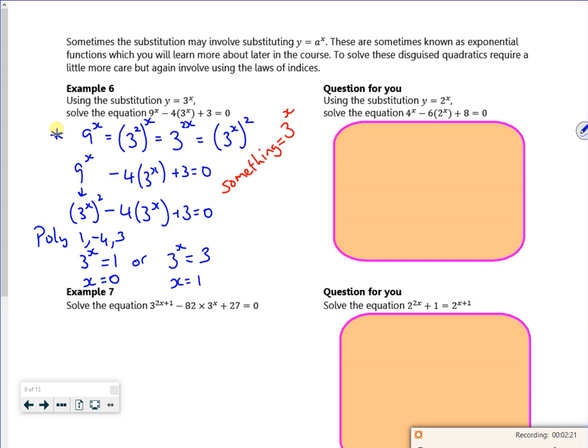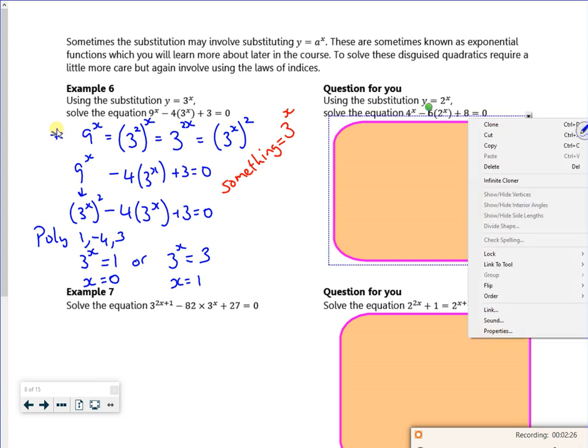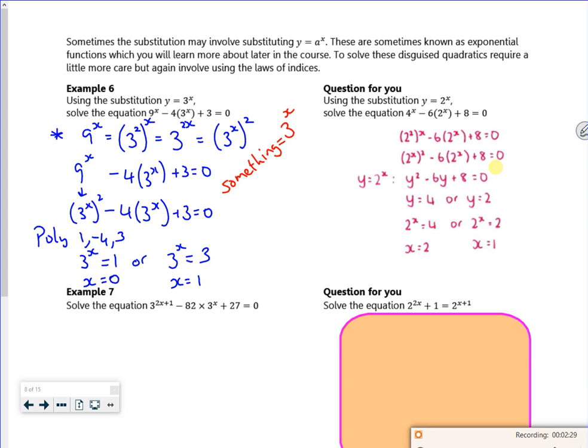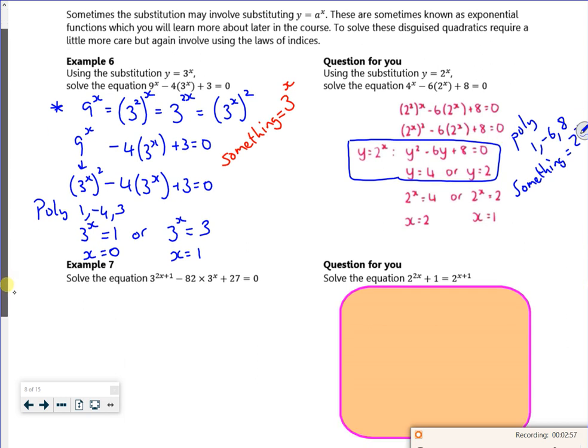I'm not sure if we do 1 in the power of 1 or not now. So there's 1 here. Now they do like the proper full substituting, changing it into 1. But if you can get to that bit there, so in poly, I'm just using 1 minus 6, 8, and my something is 2^x, and that's fine. So 2^x is 4, so 2^x is the same as 2 squared, so x is 2. 2^x is 2, so 2^x is 2 to the power of 1, so x is 1.